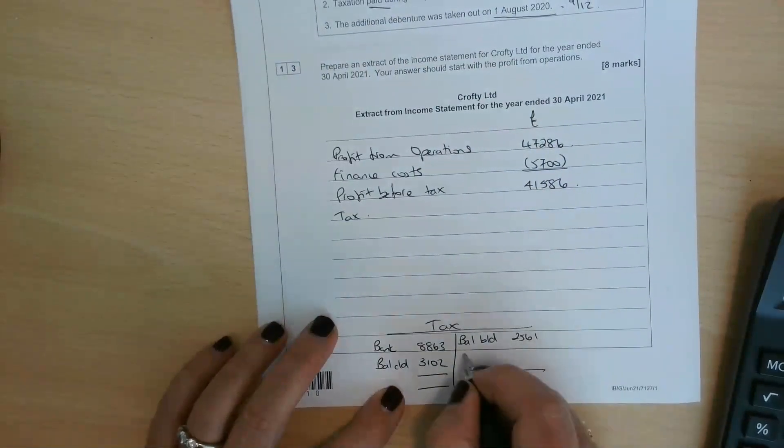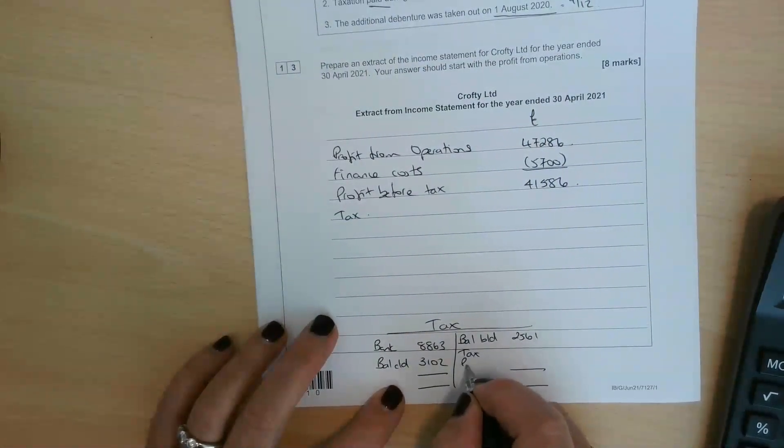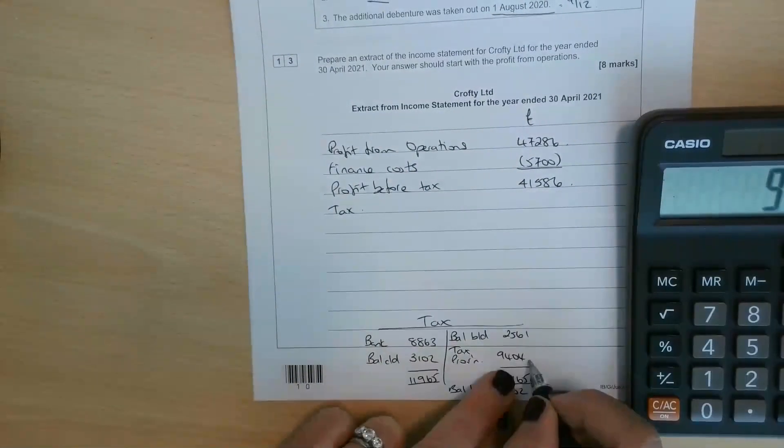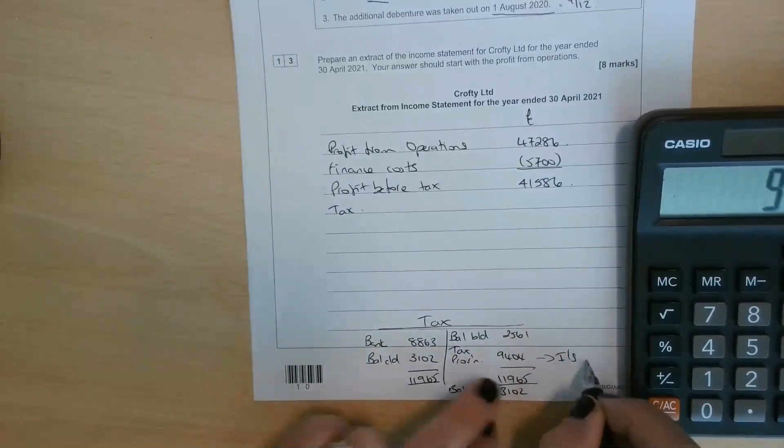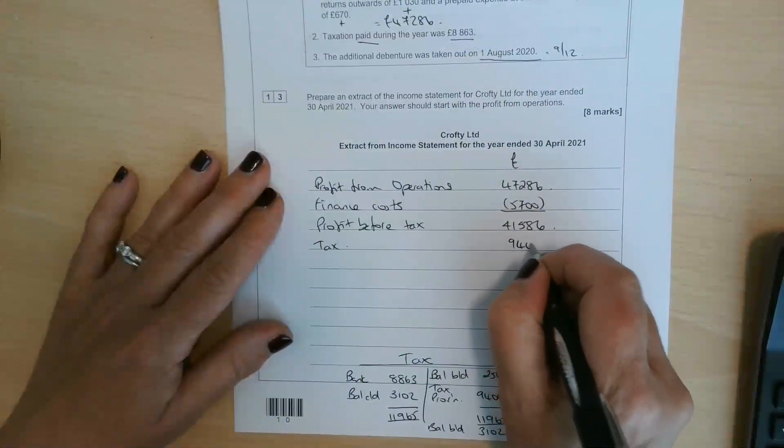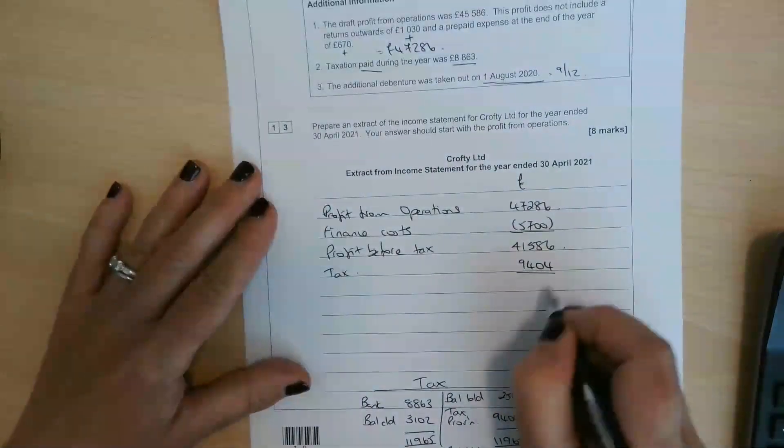The missing figure is the tax provision which goes into the income statement. All we've got to do is balance this account off. The estimate of the tax liability for the year was £9,404.